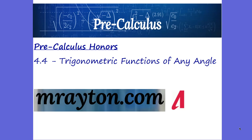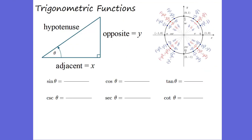Hey, this is Mr. Aiden. We're back at section 4.4, Trigonometric Functions of Any Angle. We've been going through all of our trig functions. What do we know about sine? Sine is the y over the hypotenuse r. Cosine is the x over the hypotenuse r. Tangent is the slope or the y over the x, and the reciprocal applies to all the other functions as well. We're using our unit circle to apply each one of those functions.